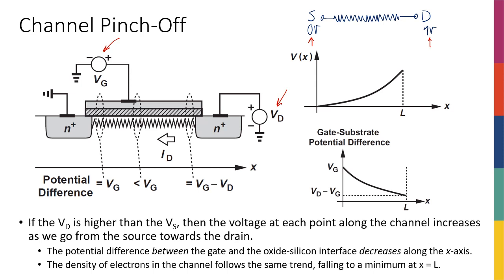Meaning that if I have one volt at one end and I had a way to measure the voltage at intermediate points, I would have values like 0.2, 0.4, 0.6, 0.8, and then one volt at the far end. Another way of looking at this is that a long resistor is like a bunch of resistors in series — a voltage divider — so if drain is at one volt and source is at zero, the voltages between the resistors will be values between zero and one, increasing from left to right.